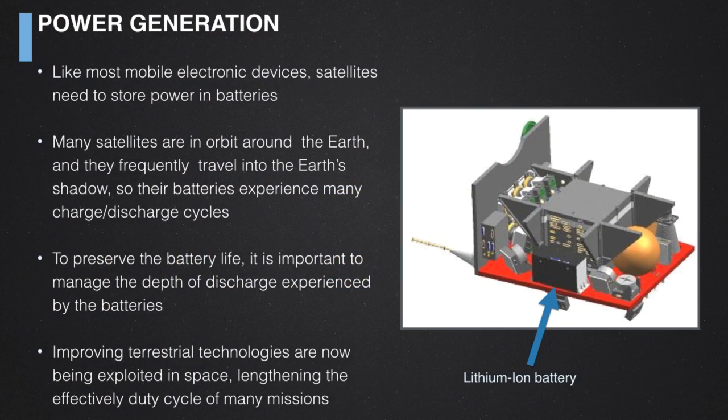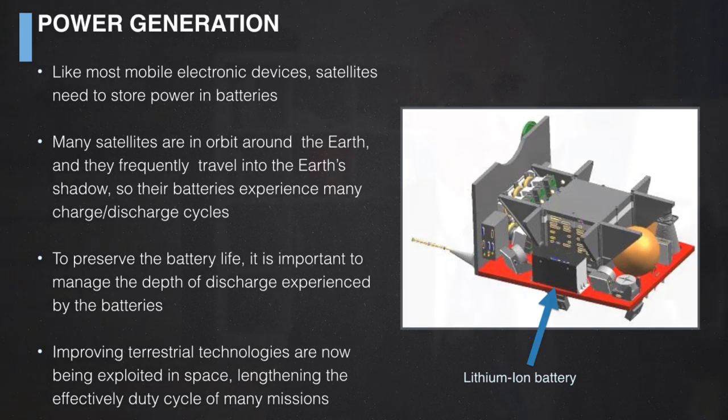Once you've got power you need to store it. Many satellites in low Earth orbit pass in and out of the Earth's shadow — going into eclipse where they're not generating power from solar panels — so you need batteries. The drive of terrestrial technology is improving things here; we used to use NiCAD batteries but have now moved to lithium-ion batteries, the technology found in mobile phones. These are more efficient, improving the duty cycle so we can switch the satellite on and have it operating for a larger proportion of its orbit.